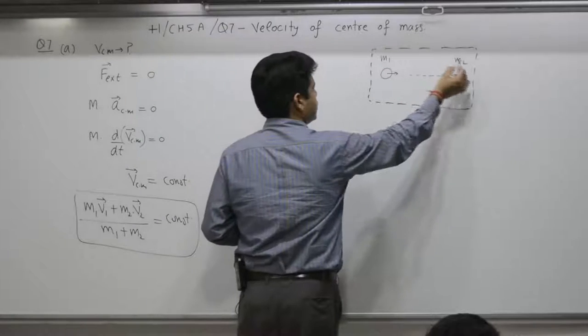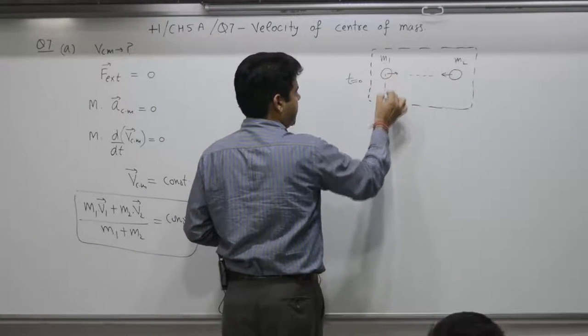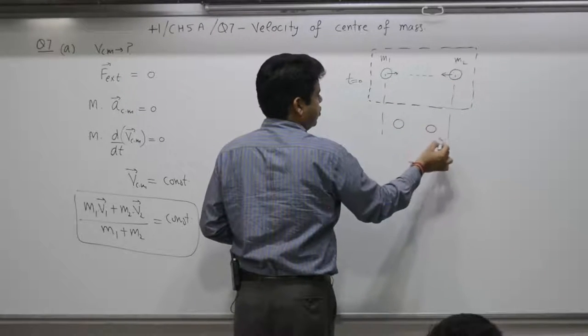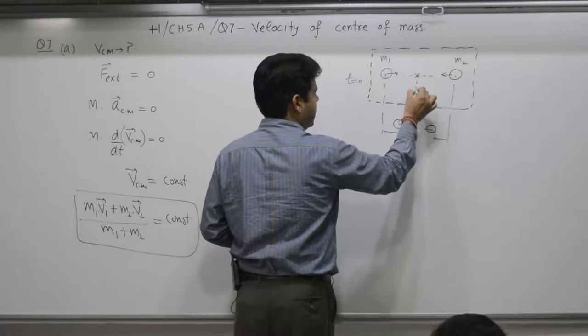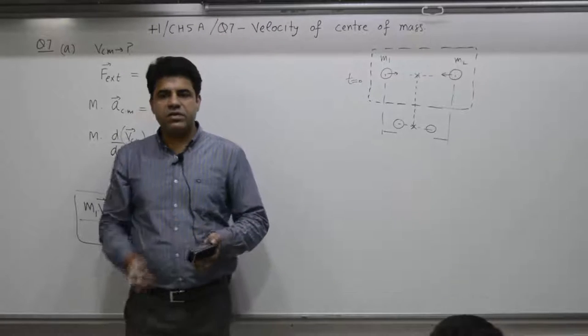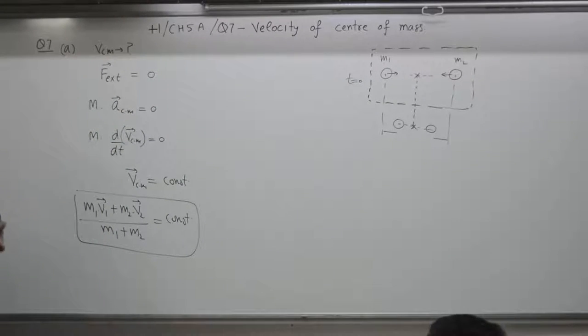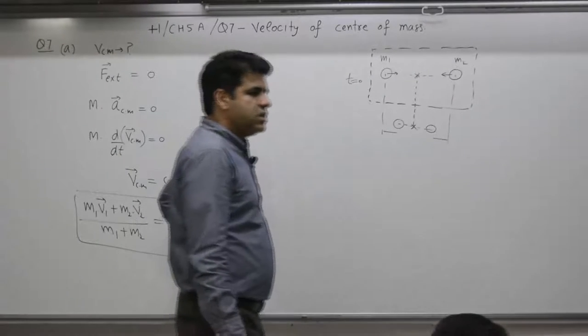Suppose M1 is 1 kg, M2 is also 1 kg. This is a photograph at t equals 0. After some time, what you find is both objects shift by equal distance. Again, the center of mass remains wherever. What was the velocity of the center of mass initially? 0. What is the velocity of the center of mass now? 0. Velocity of center of mass remains same.